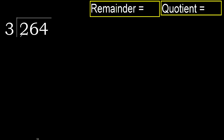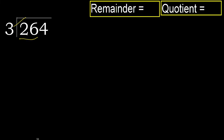264 divided by 3. 2 is less, therefore next: 26. 26 is not less, therefore with 26 — 3 multiplied by which number is nearest to 26 but not greater? 3 multiplied by 9 is 27, which is greater. 3 multiplied by 8 is 24, which is not greater. So 26 minus 24 is 2. Next.